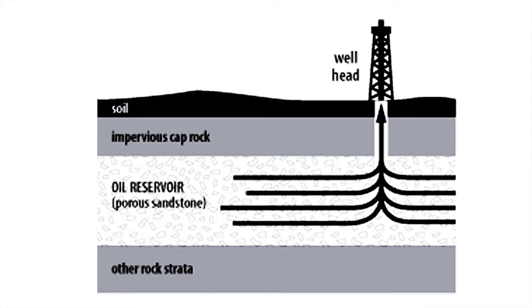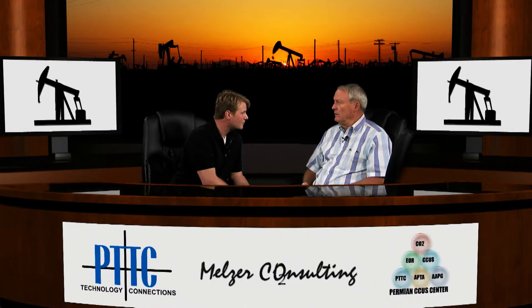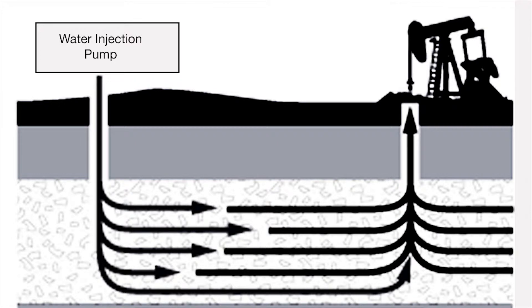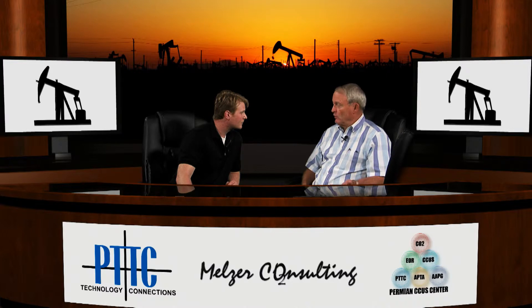The one that starts out in all reservoirs is called primary production, where you're drilling into the formation and producing the fluids — gas or oil — by its own natural pressure. But eventually that pressure dies off and it's no longer economic to produce the well. So you go to the second stage, which involves injecting some substance, usually water, to push oil from a converted injector well to the producing wells left in the field. This is called secondary production, or water flooding.